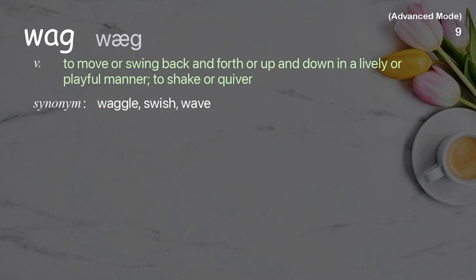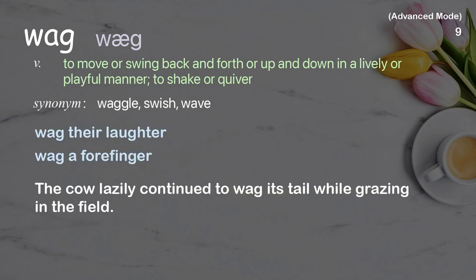Wag: to move or swing back and forth or up and down in a lively or playful manner; to shake or quiver. Examples: wag their laughter, wag a forefinger. The cow lazily continued to wag its tail while grazing in the field.